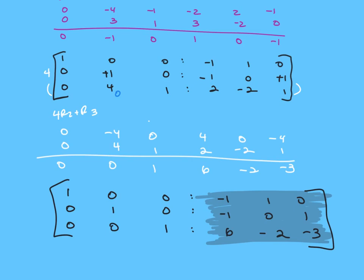On the homework, there are two 2×2 problems where you can use either method — the shortcut is suggested. There's one 3×3 that requires the full row-operation process. And there's one where you use the calculator. Don't freak yourself out — use the calculator to check your work. Questions on anything inverse-related?